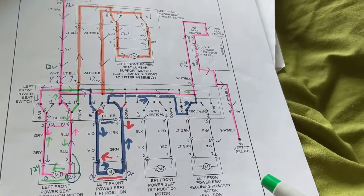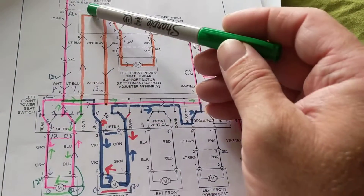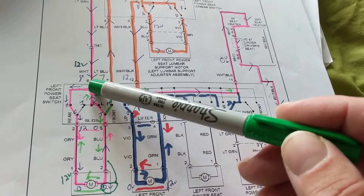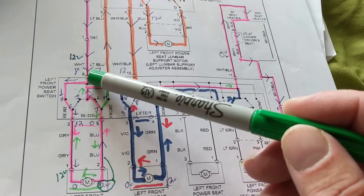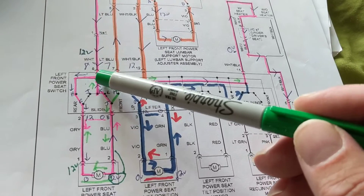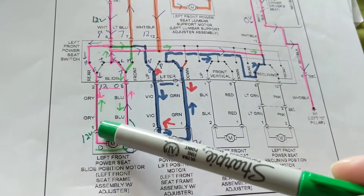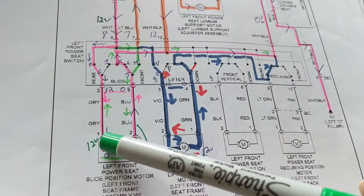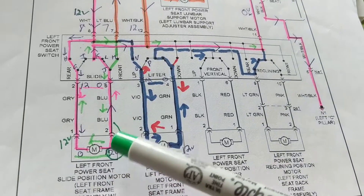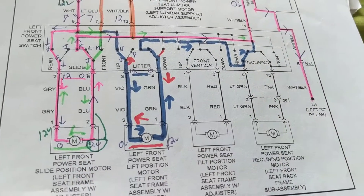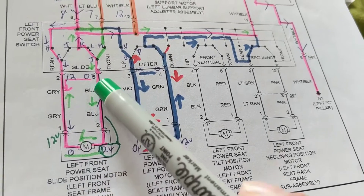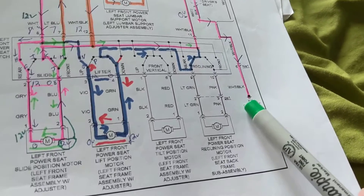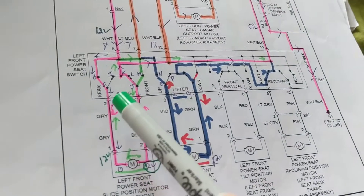I'll zoom out so you can understand. We come over here, to this point — a node or splice. Follow the pink. We go through this. You should have 12 volts here, 12 volts here, 12 volts over here. We come out — how much should we have here? Zero volts. Why? Because we're connected to ground. That's when you want to slide to the rear.